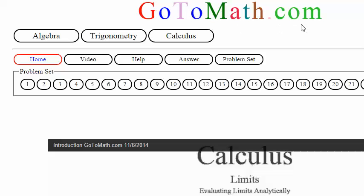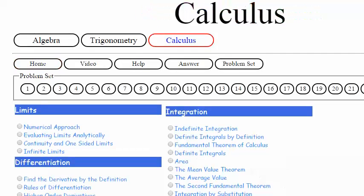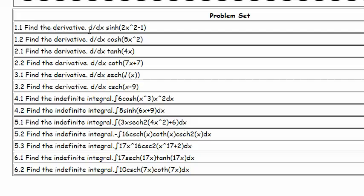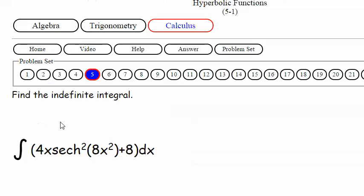Okay, so we're here at GoToMath.com. Click on the calculus. Let's go down to hyperbolic functions and I believe we're at 5.1 now. Click on that.